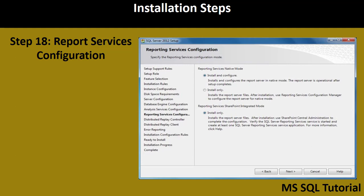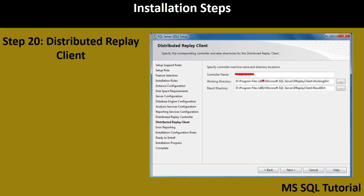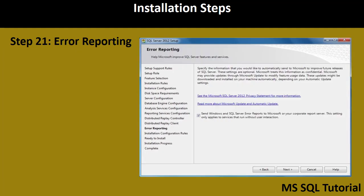Once Step 18 is complete, proceed to Step 19 — Distributed Replay Controller. Users granted permission here will have unlimited access to the Distributed Replay Controller service. Add the current user by clicking 'Add Current User' and click Next. Step 20 is the Distributed Replay Client, where you provide the controller name and click Next.